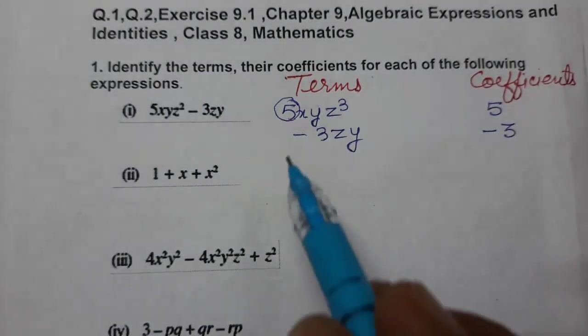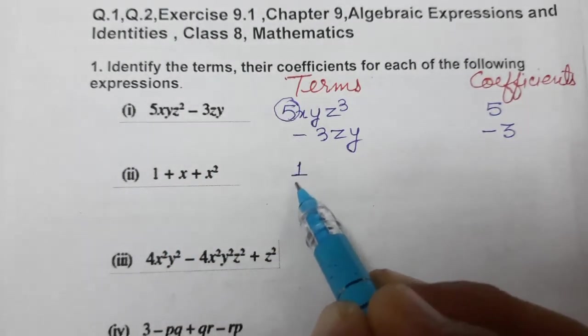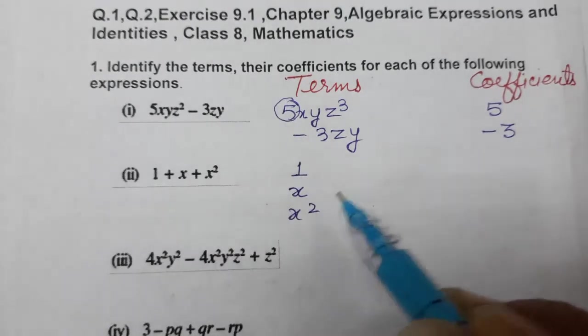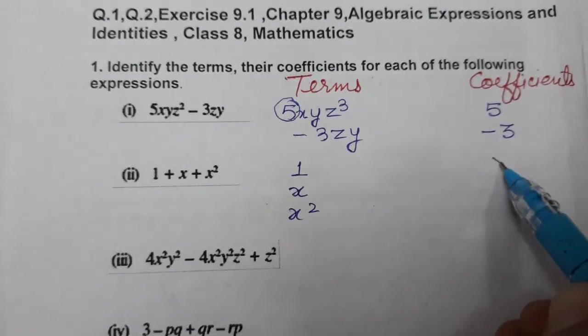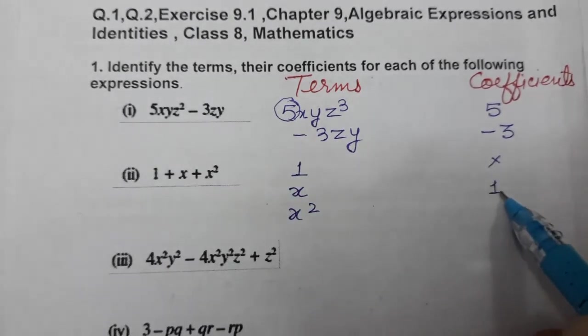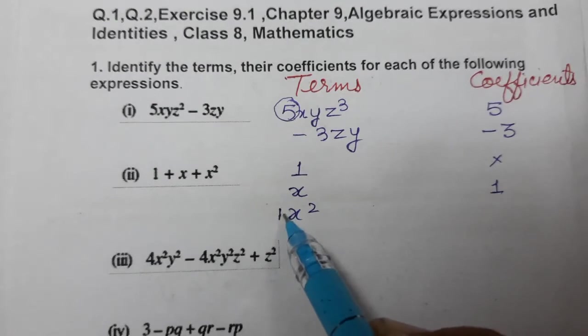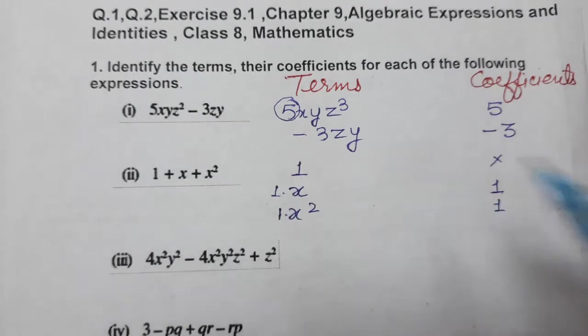Next one, first one complete. So what are the terms here? 1, then x, then x². And no need to write coefficient for constant term. X coefficient, if nothing is there, is 1. And x² coefficient is also 1. So 1 is attached: 1·x, 1·x².